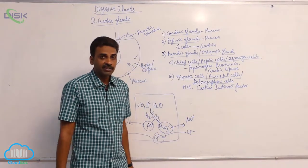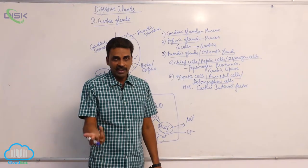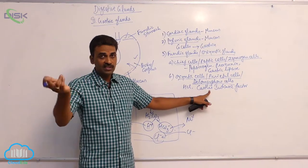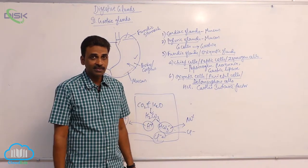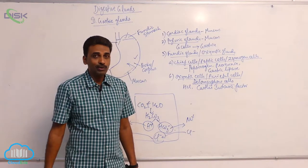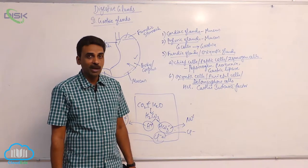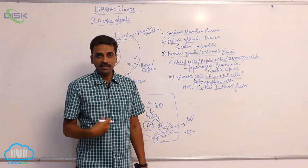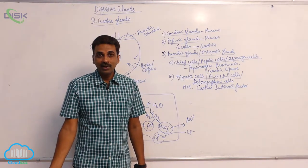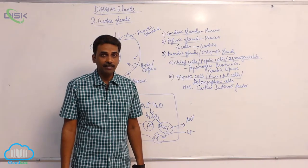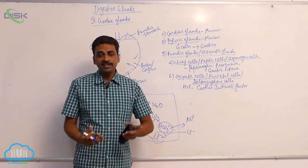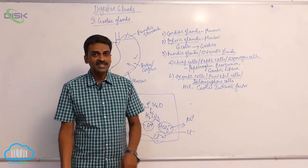Castle's intrinsic factor is given by oxyntic cells. There are both extrinsic and intrinsic factors. The extrinsic factor is vitamin B12, also called cyanocobalamin. Vitamin B12 is required for erythropoiesis. Deficiency of B12 causes pernicious anemia — a harmful form of anemia where the lifespan of red blood cells is reduced from 120 days to 60 days.